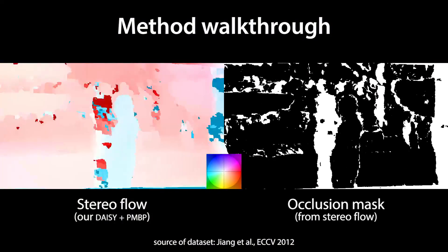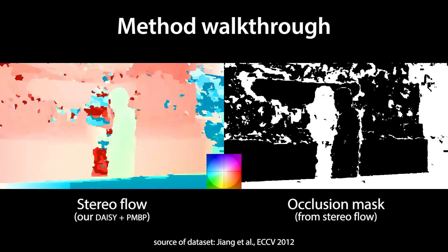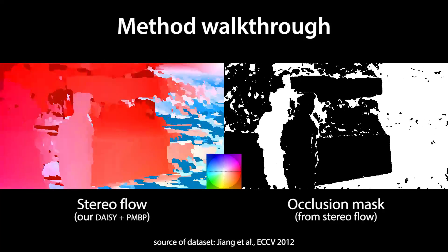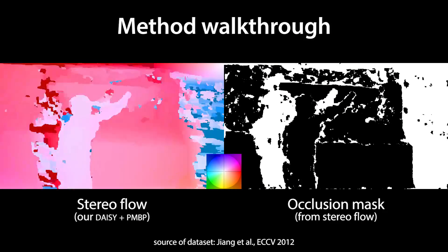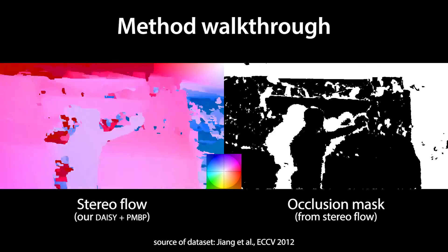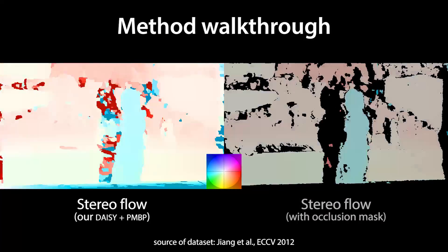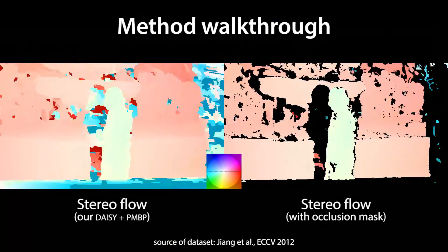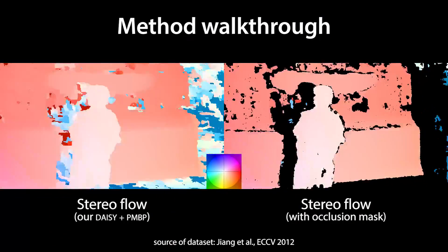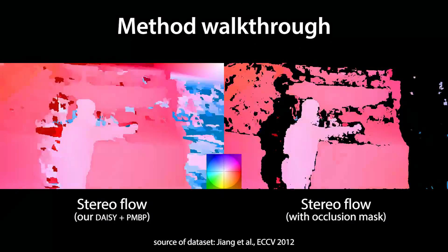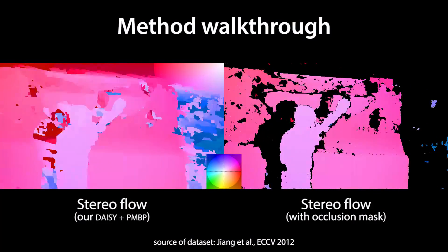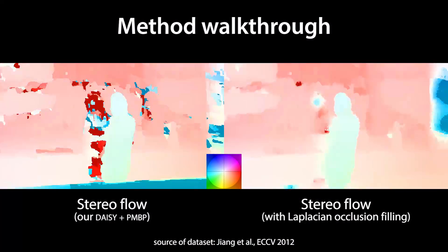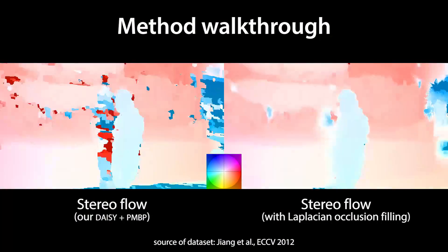Next, we compute occlusion masks from the stereo flows using the forward-backward consistency check to discard incorrect correspondences. The result is a reliable stereo flow with many occlusion holes that need to be filled. We fill the invalidated regions using a novel technique that uses edge-preserving Laplacian hole filling.